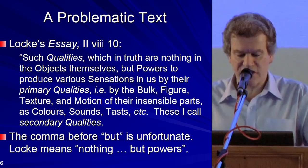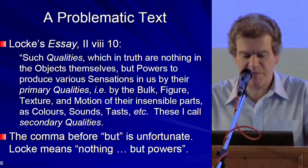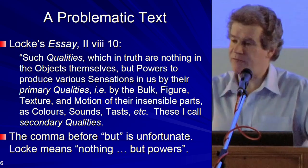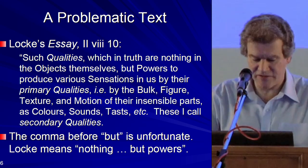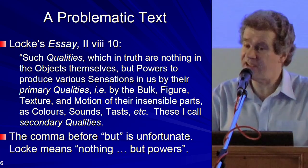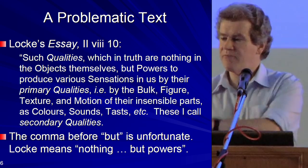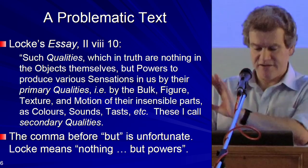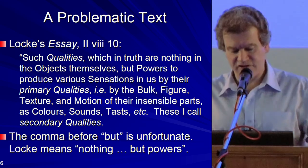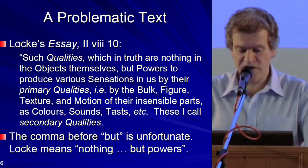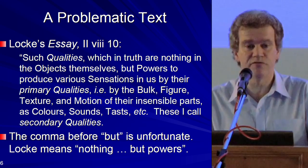Locke draws a distinction between primary and secondary qualities. He talks about secondary qualities as those which 'in truth are nothing in the objects themselves, but powers to produce various sensations in us by their primary qualities — i.e. by the bulk, figure, texture and motion of their insensible parts — as colours, sounds, tastes, etc. These I call secondary qualities.' So you've got the primary qualities in the object — bulk, figure, texture, motion — and secondary qualities which are, he says, nothing in the objects themselves, but powers to produce ideas in us.